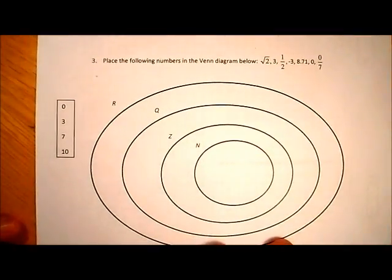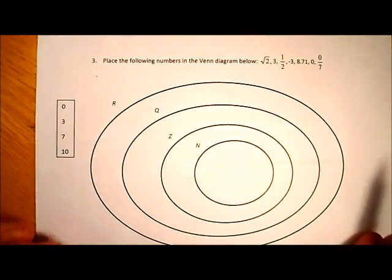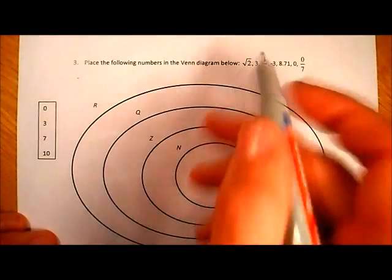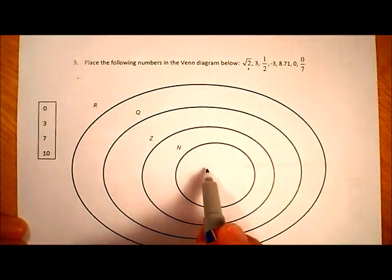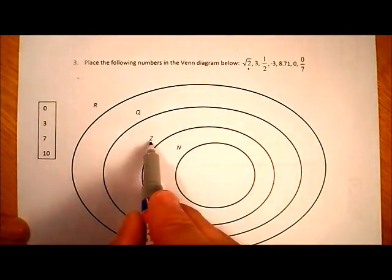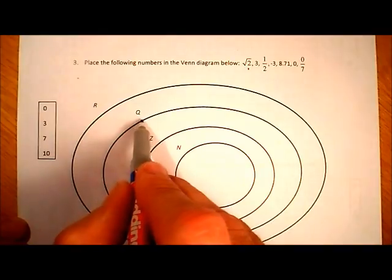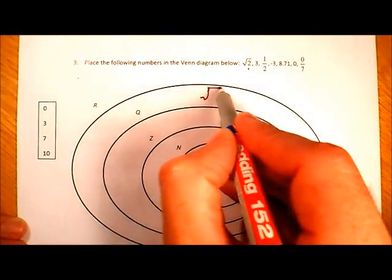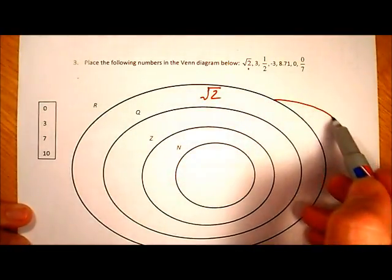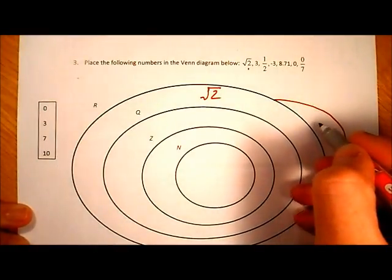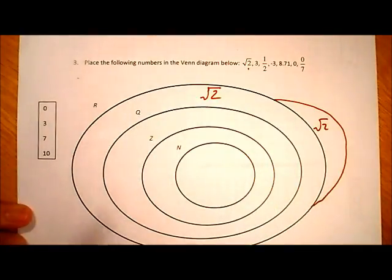For the third question, we have a list of numbers to place in a Venn diagram. When doing this, always start from the center and work your way out. The square root of 2 is not a natural number, not an integer, and not a rational number, so it goes in the real number circle. Sometimes there's an extra section added for irrational numbers.